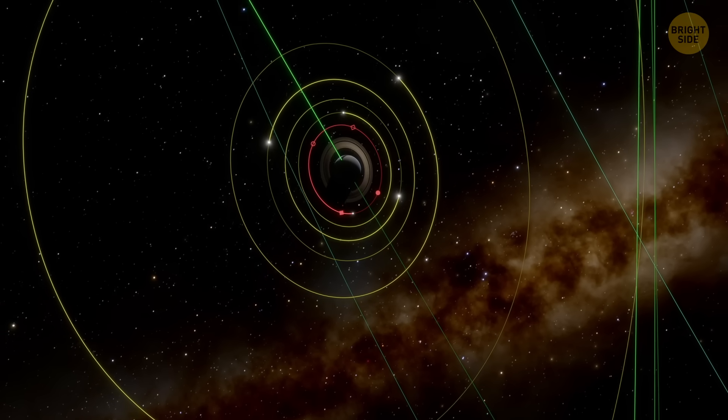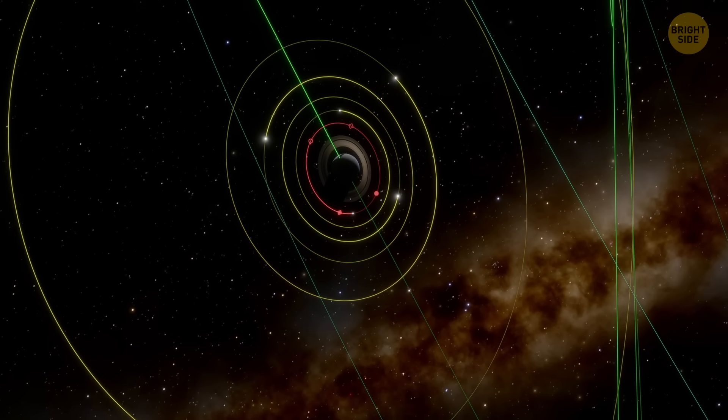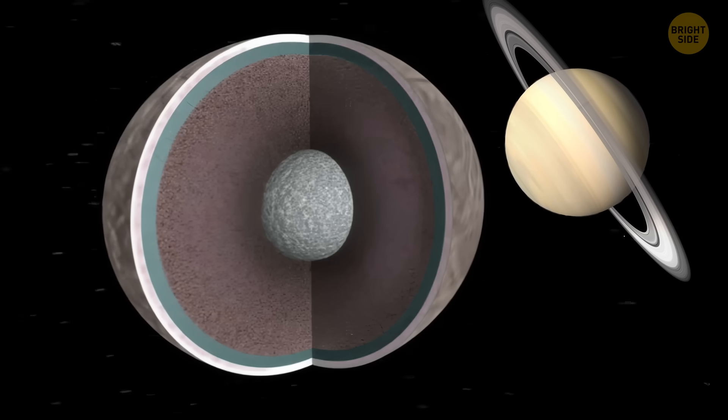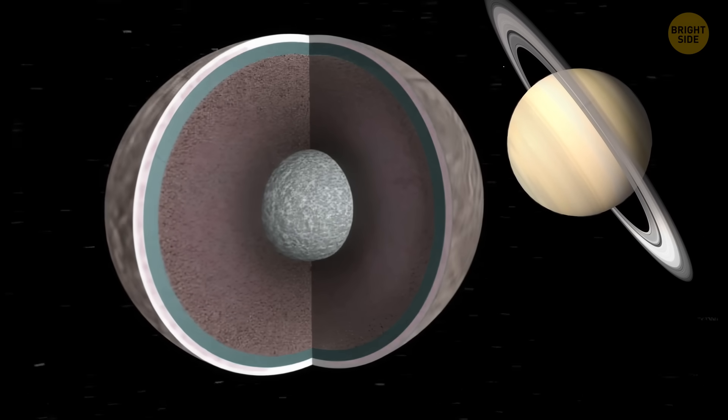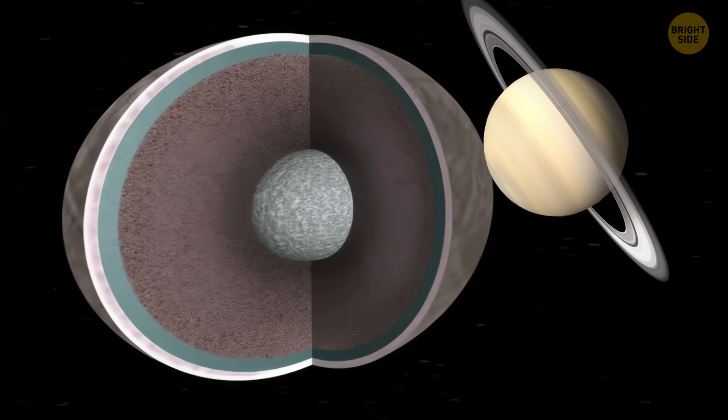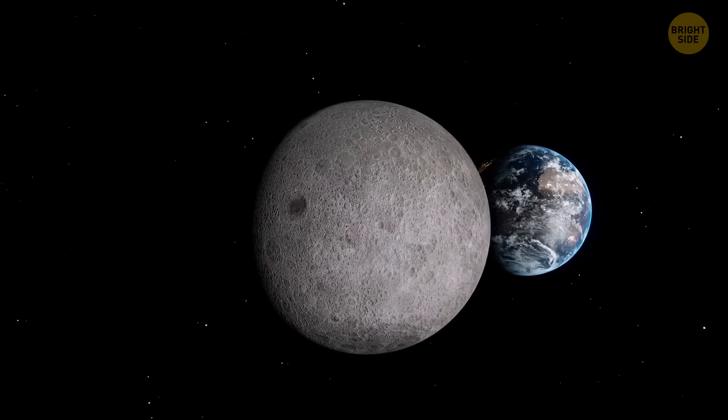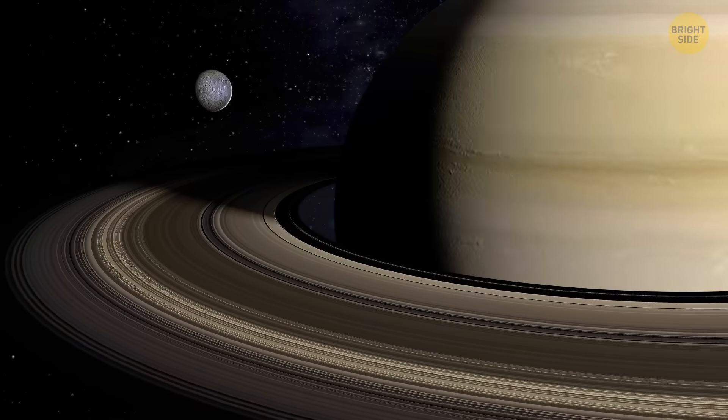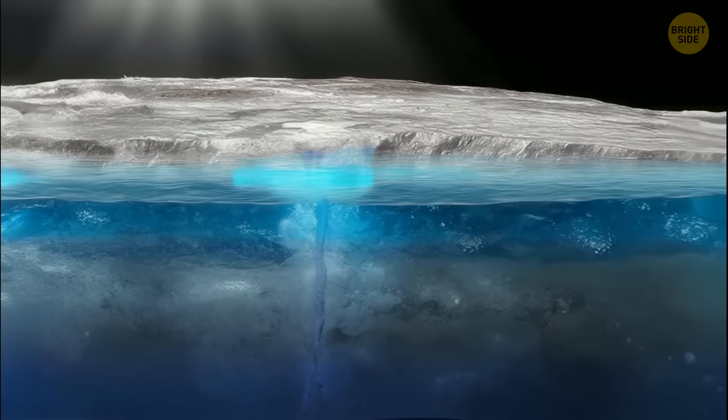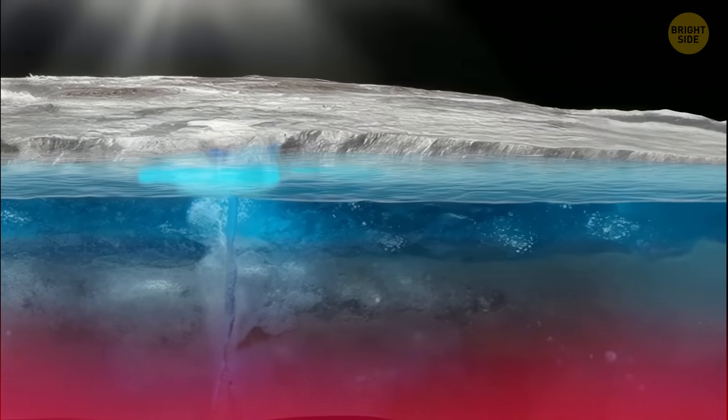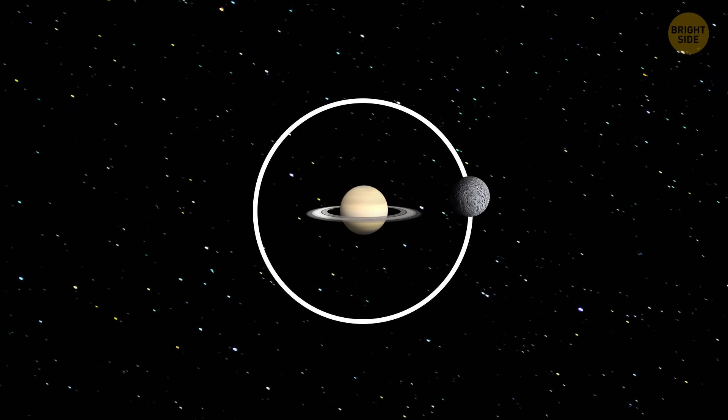The moon doesn't orbit Saturn in a perfect circle. Its path gets a little stretched. That oval shape means the moon gets pulled and squeezed by Saturn's gravity as it orbits. The same way the Moon's gravity gives us tides here on Earth, Saturn's gravity tugs on Mimas. But instead of water tides, it's flexing solid ice. And that flexing creates heat.